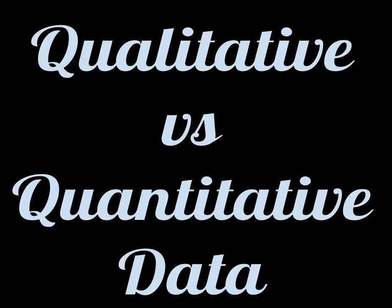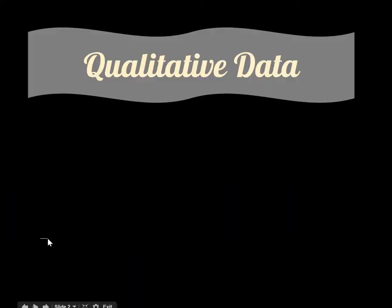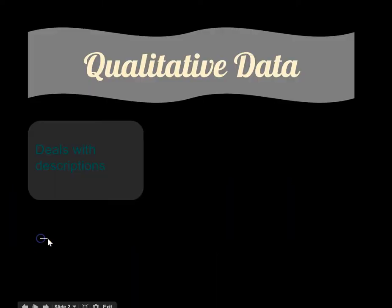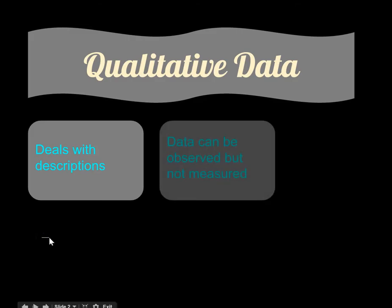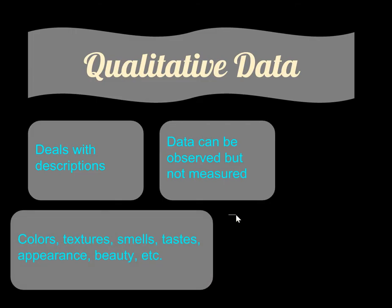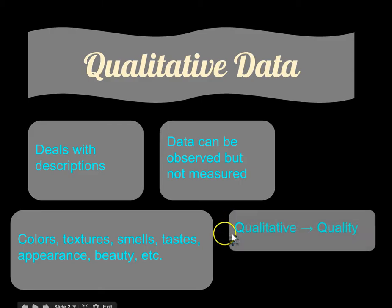In this video we are going to talk about the difference between qualitative and quantitative data. So qualitative data deals with descriptions. It's data that can be observed but not measured. So it's going to be stuff like colors, textures, smells, taste, appearance, whether something's pretty or not. You can remember this because qualitative refers to the quality of something.